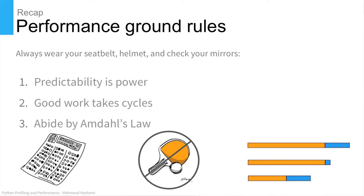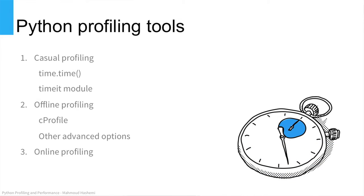To recap: predictability is power — you want tests, you have CPython. Good work takes cycles — make sure you have the right instrumentation in place. You don't want to be flying blind in production. And finally, abide by Amdahl's law. Now that we have the ground rules set and you're wearing your seatbelt, we can get into the actual optimization. Optimization always begins with profiling tools. I've separated these into three categories: casual profiling, offline profiling, and online profiling.